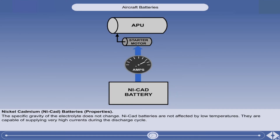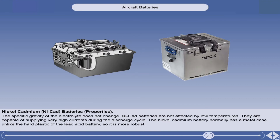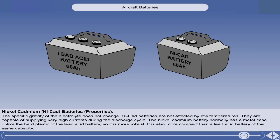A NICAD battery has a low internal resistance. Because of this, it is capable of supplying very high currents during its discharge cycle. This type of battery is often used to drive the starter motor of an airliner's auxiliary power unit. The nickel cadmium battery normally has a metal case, unlike the hard plastic of the lead acid battery, so it is more robust. It is also more compact than a lead acid battery of the same capacity.